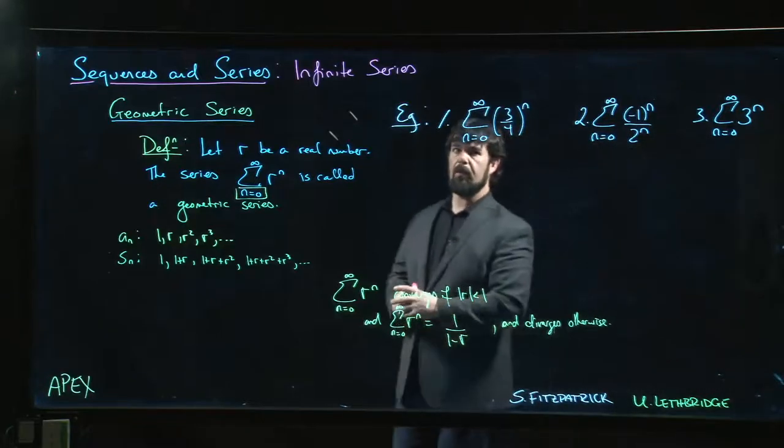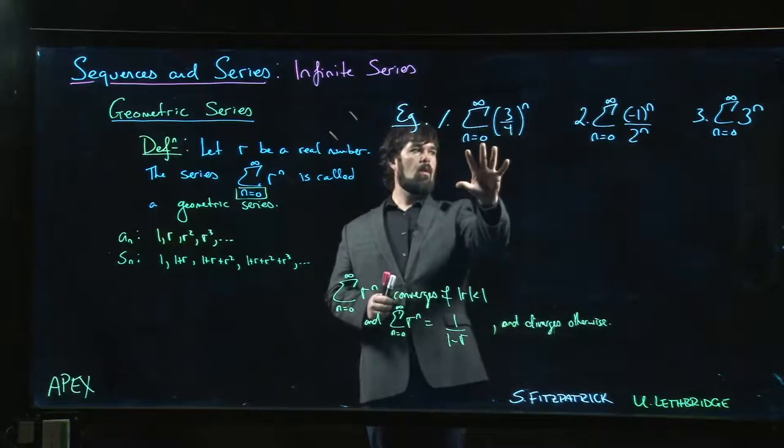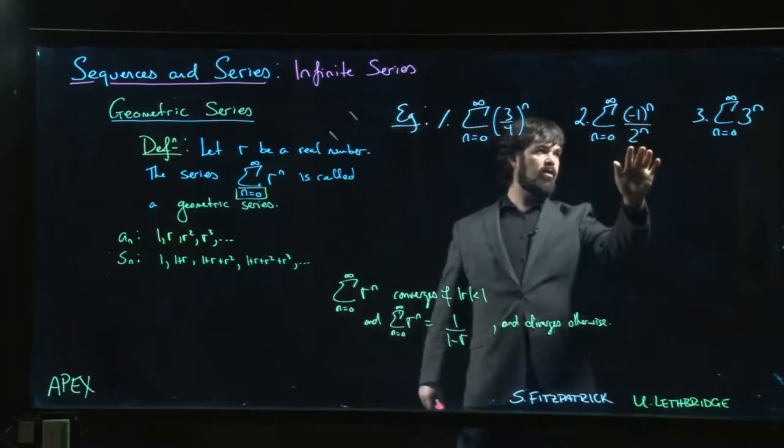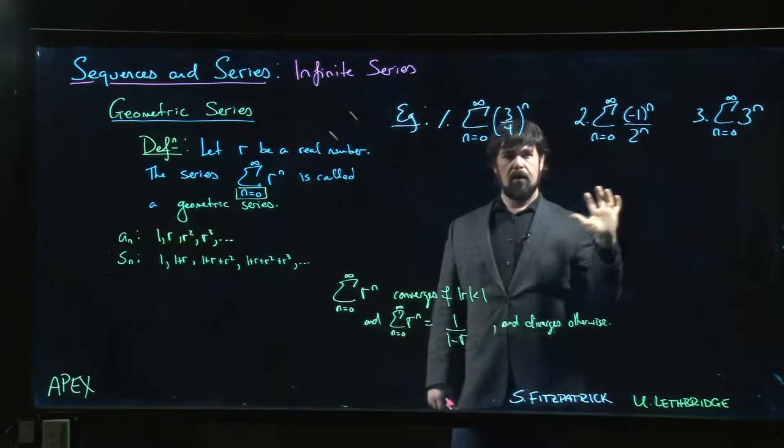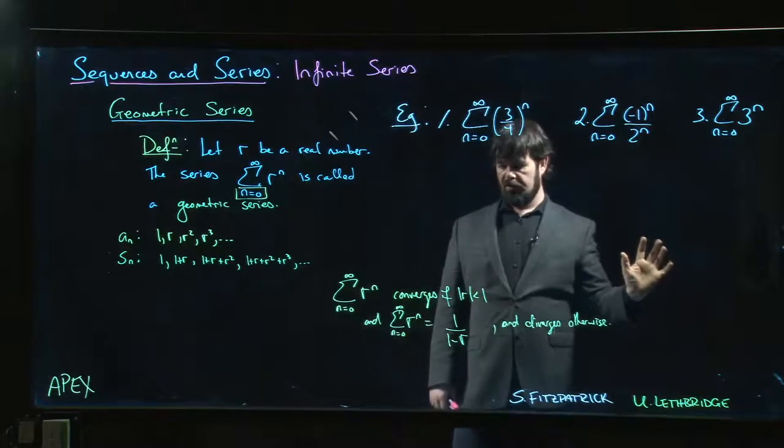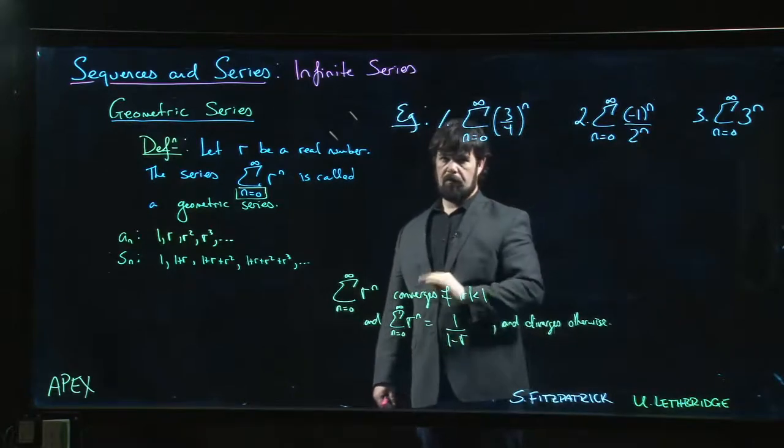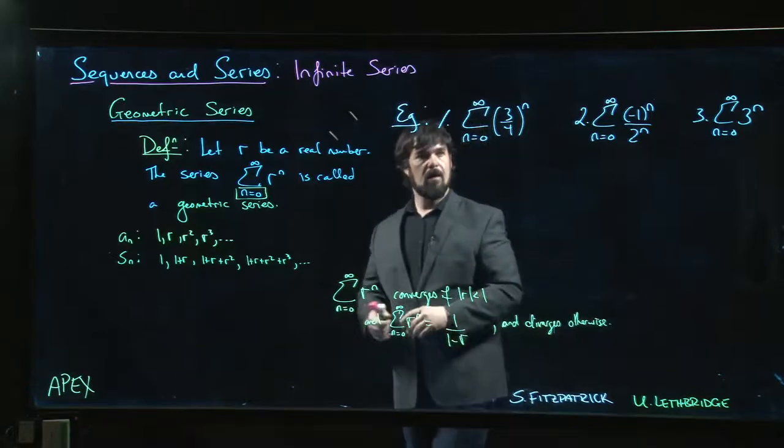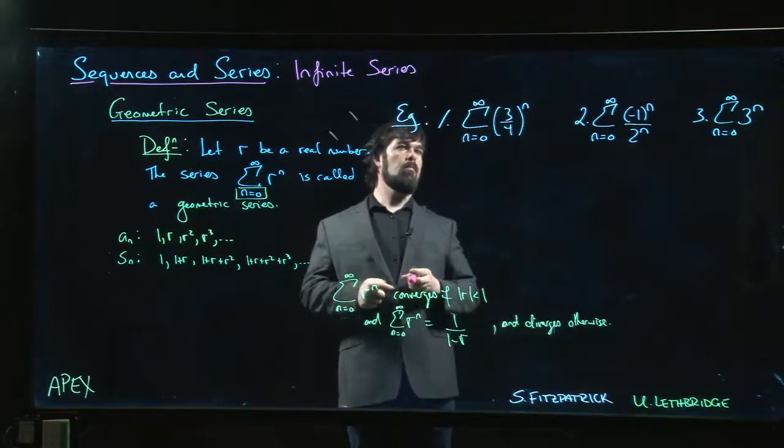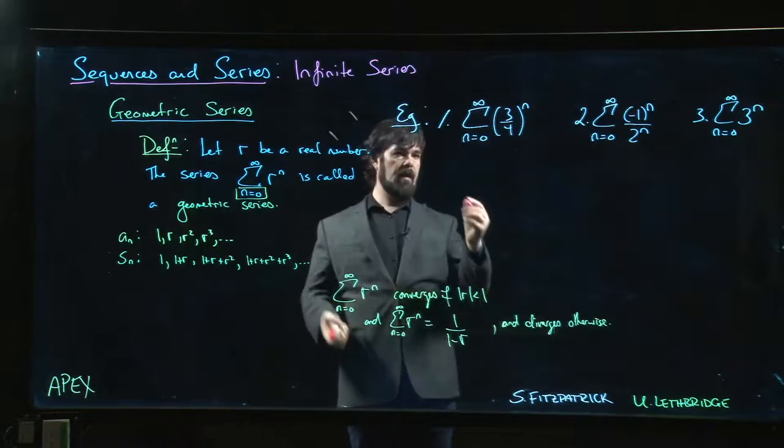Alright, here are three quick examples: three quarters to the n, minus one to the n over two to the n, three to the n. We want to identify these as geometric series, decide if they converge, and if they do converge, figure out what the value is.